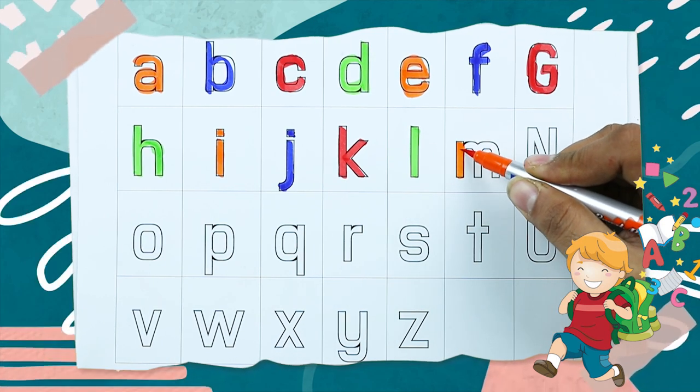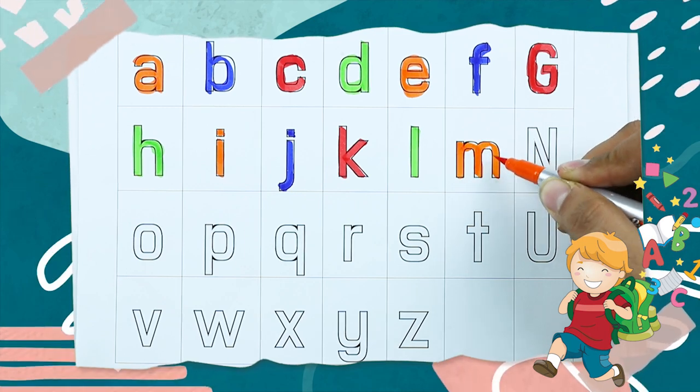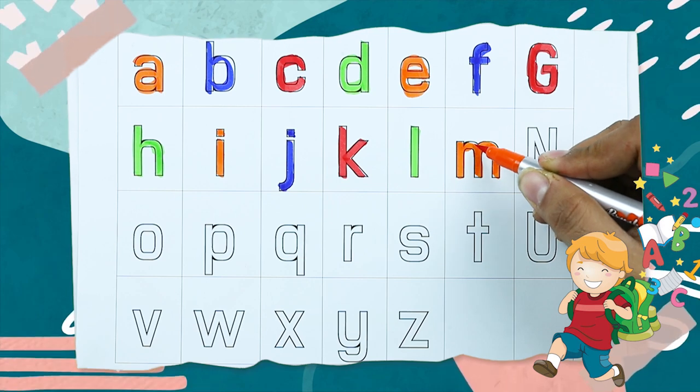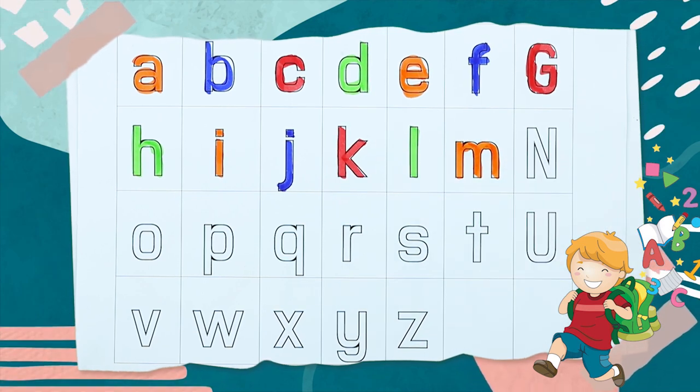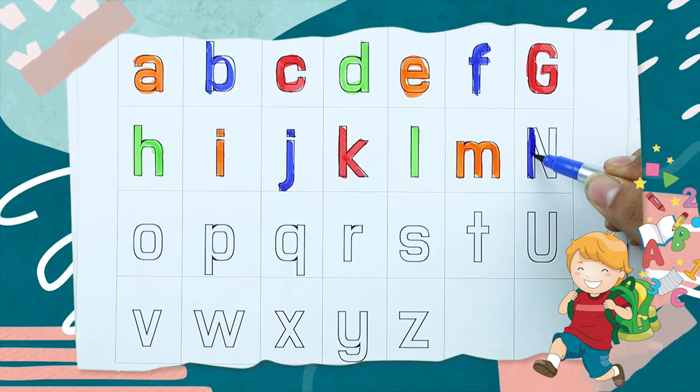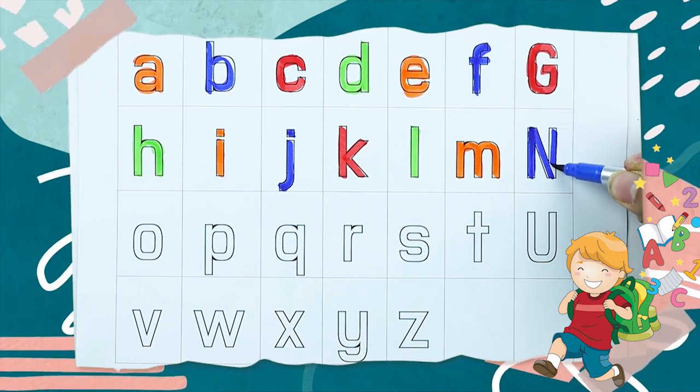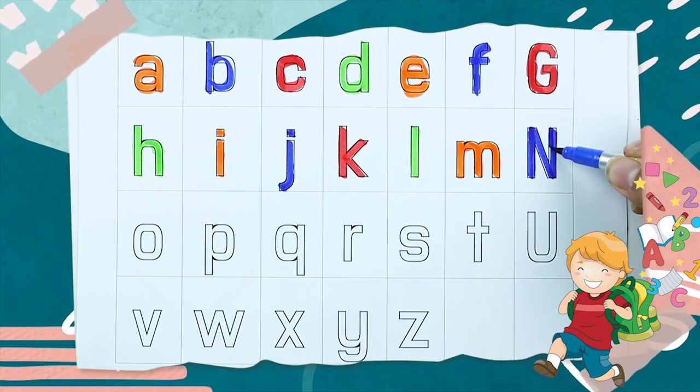M, it's M, M for monkey, M for monkey. N, it's N, it's N, N for nest, it's N.